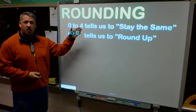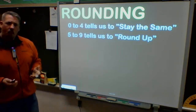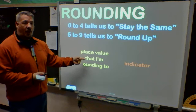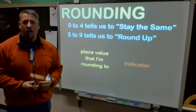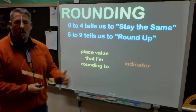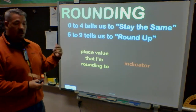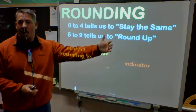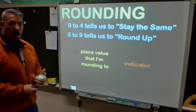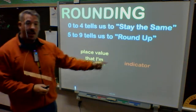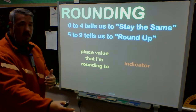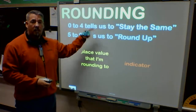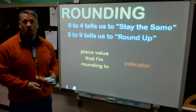I have to remember those two things. We have to remember how we mark it and show our work so we know how we're rounding, so we have a place value that we're rounding to — whether it says to round to the nearest hundred, ones, tenths, hundredths, or thousandths. I have to underline that position. The indicator is always to the right, and the indicator tells me what I'm doing and which rule it falls into.